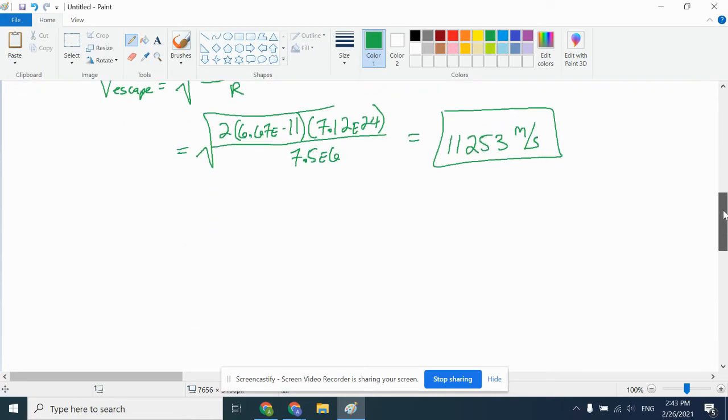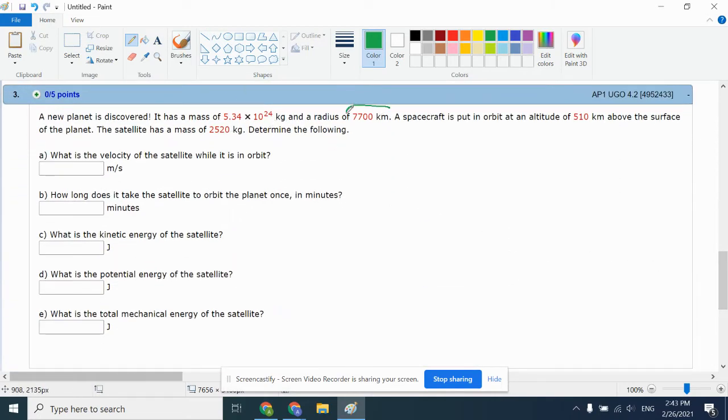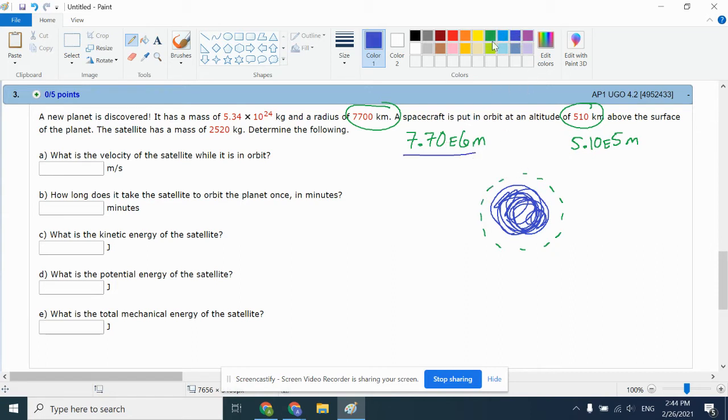Moving on to question 3, third and final question for this WebAssign. New planet is discovered, you're given the mass and the radius. Once again, I'm going to immediately convert this radius, 7.70E6 meters, and altitude 5.10E2 kilometers, so it's E5 meters. Now what I'm looking at is here's my planet, not the best circle but good enough, and here's my orbital path. This is the radius of the planet, this is the altitude. The result, R, would be this number plus this number, so that's going to come out to 8.21E6 meters. That will be the radius that I'll be using as I solve this.